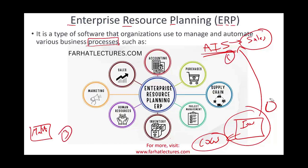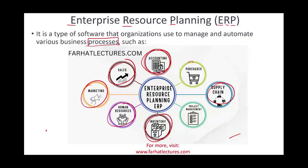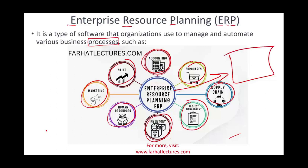So what did large companies start to do? Companies like Oracle and Microsoft started to offer software that integrates everything. You have one software with your accounting, sales, inventory, HR, marketing, supply chain, purchases, and project management — all integrated, all communicating with each other, all giving you the information you need based on one common platform.